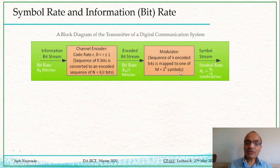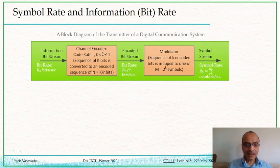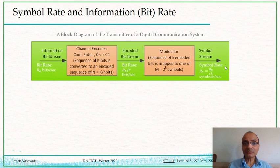Let us take an example: r = 1/2 and modulation is QPSK, for which M = 4 and k = 2. Then RB and RS are the same — if 100 bits come in every second at the input to the encoder, then 100 symbols will be transmitted every second at the output of the modulator.